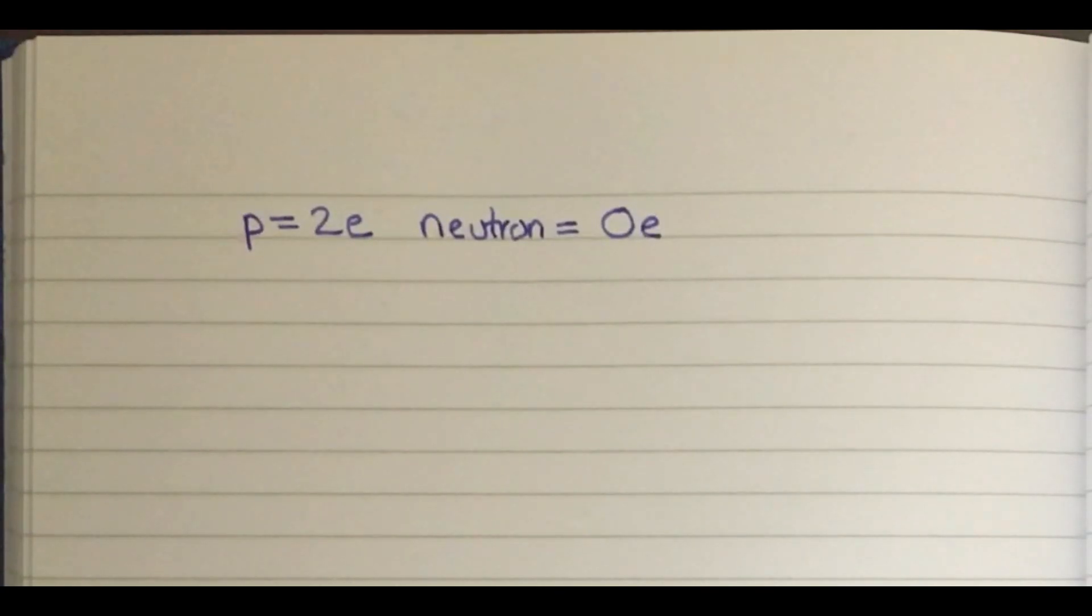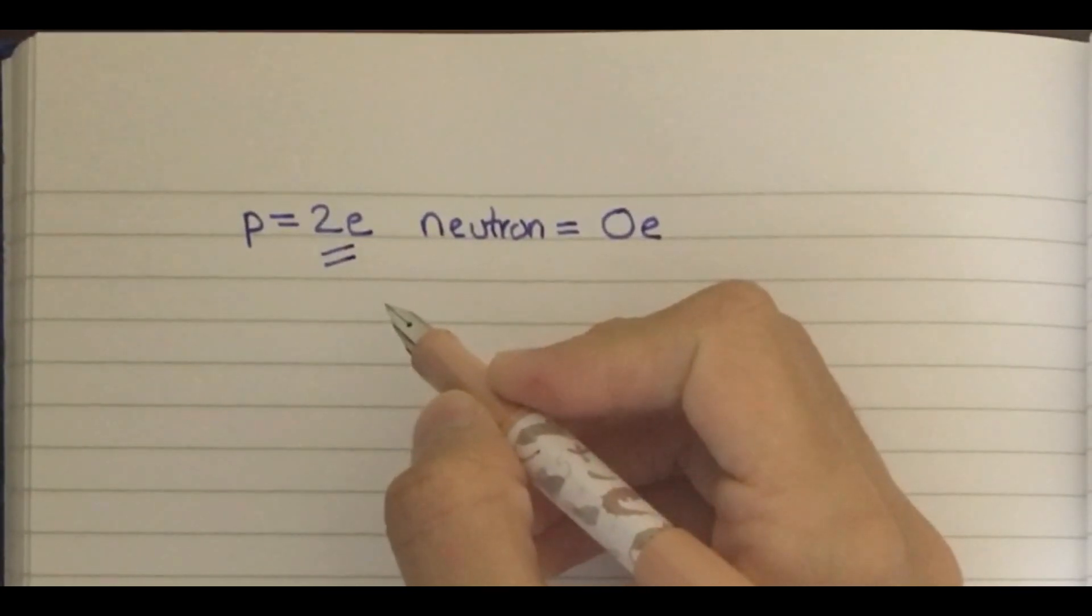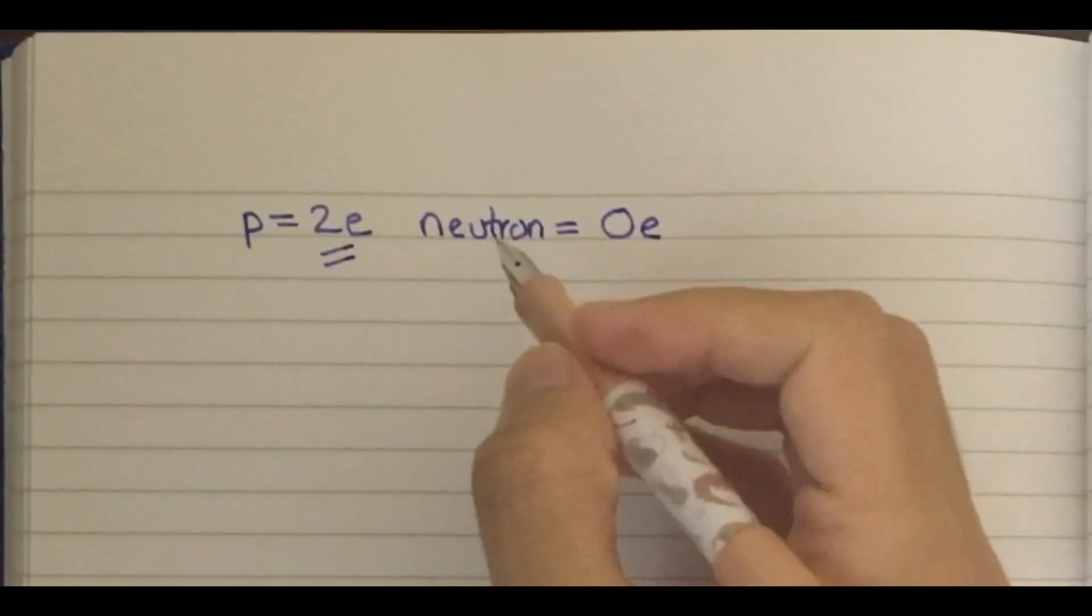For proton, we need to add them up to get the charge of +2e. I can see the combination is uud.